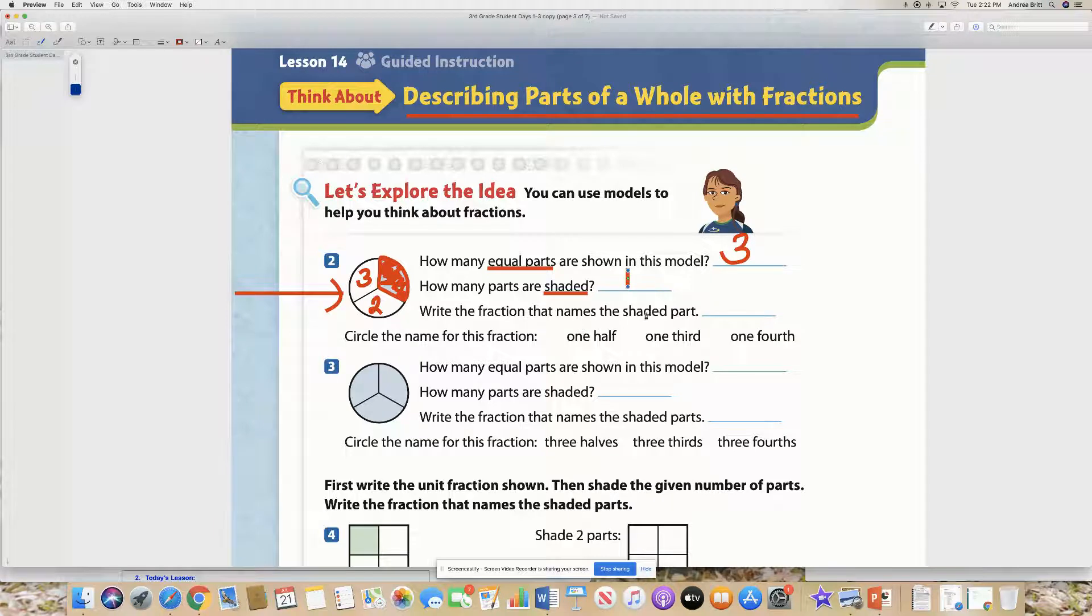Write the fraction that names the shaded part. When I look at this, what is this fraction? Looking at this model, what's the fraction? Perfect. Very easy. There is one part shaded right here, and there are one, two, three parts. The fraction is one-third.